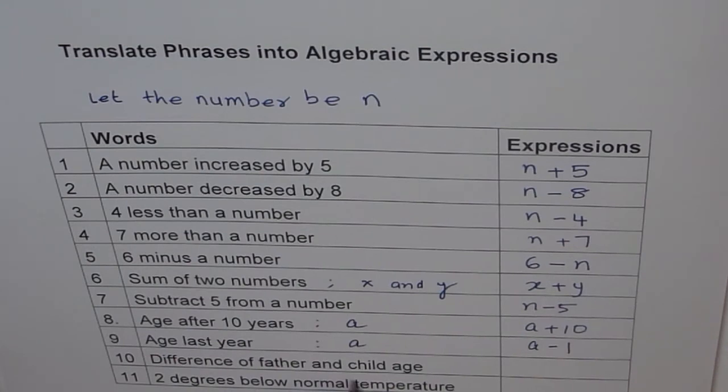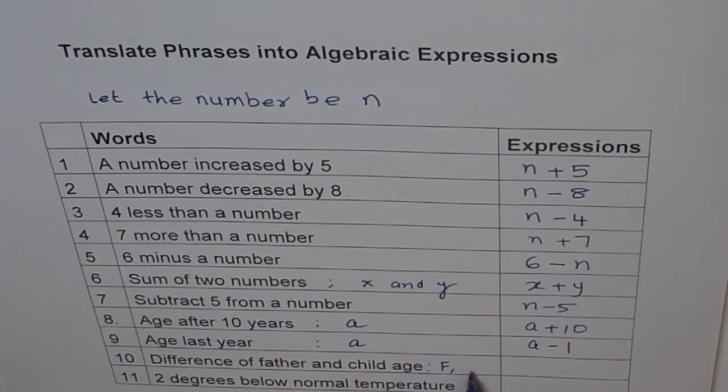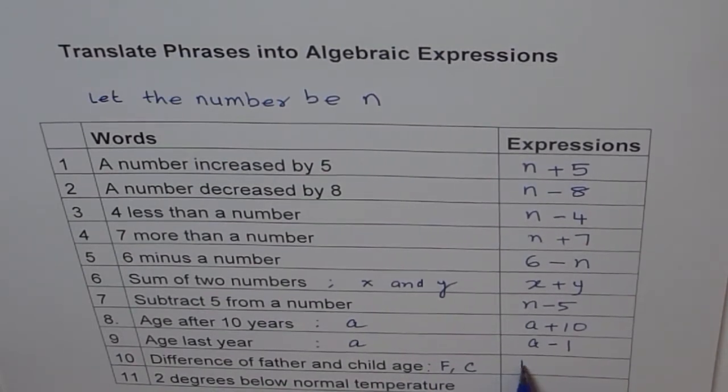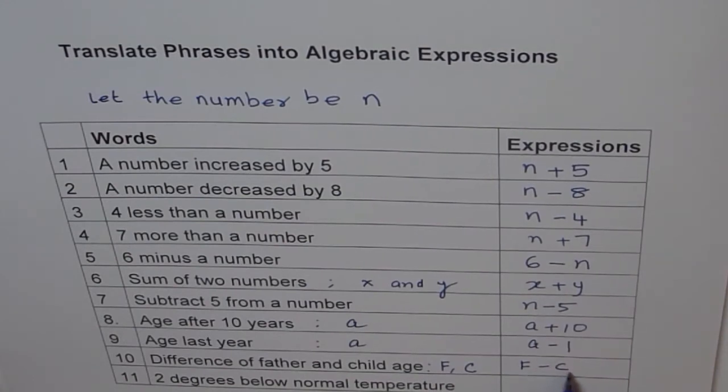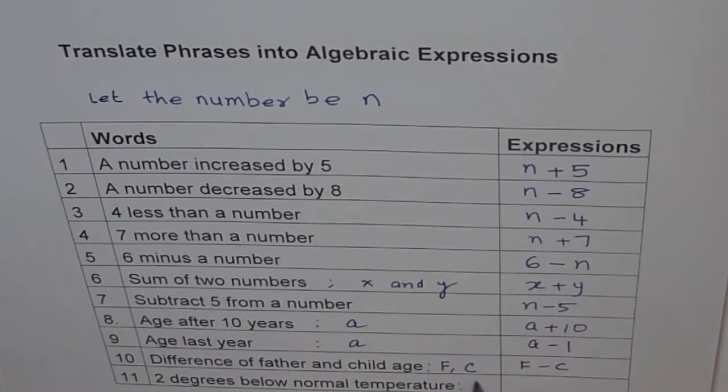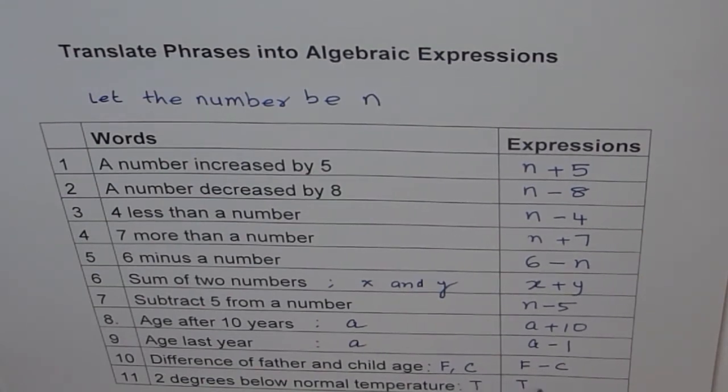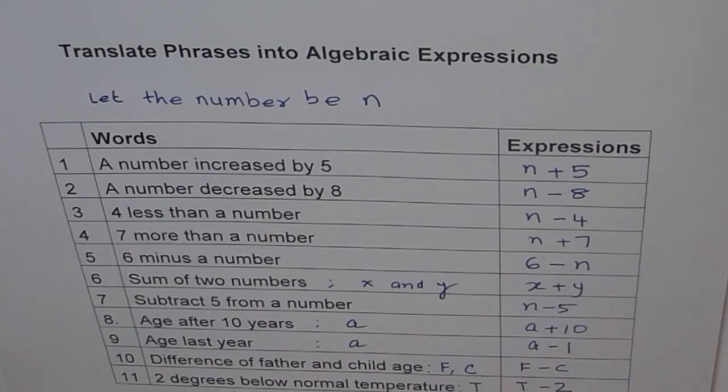Difference of father and child age. So let father's age be F. We can write capital also sometimes. And child's age be C. Then difference of their age will be F minus C. 2 degrees below normal temperature. Let the temperature be T. 2 degrees below means T minus 2. Do you get it? So these are the correct answers.